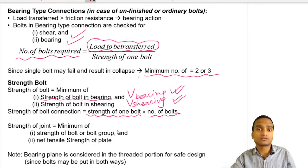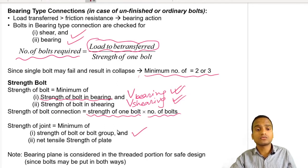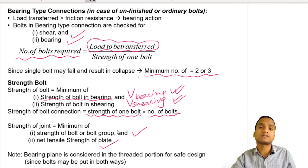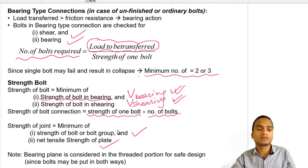The strength of the joint is also the minimum of the strength of the bolt group and the net tensile strength of the plate. If the bolts are weaker, the bolts fail first; if the plates are weaker, the plates fail first. So we take the minimum of either the bolt group or the plate, whichever is weaker.